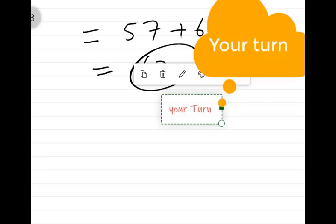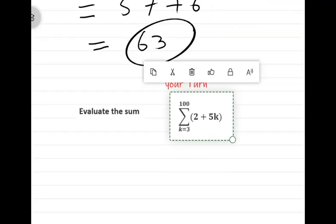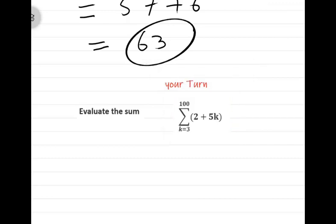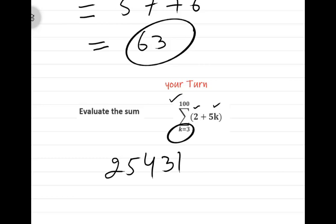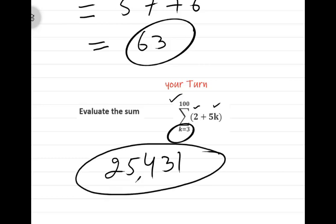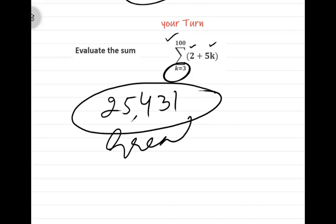Now it is your turn to evaluate some summation series using this property. Evaluate the sum of this series. Notice that here the index is ranging from 3 to 100. Try to solve it, and if your result is 25431, then great. If not, watch the video lecture again so as to understand this property well.